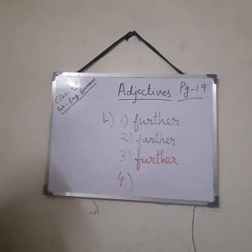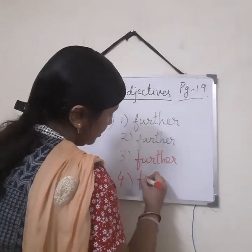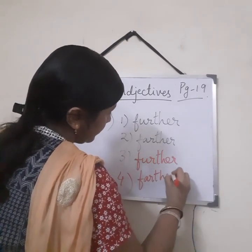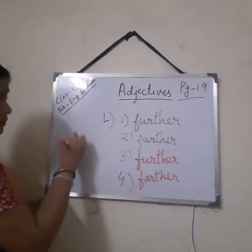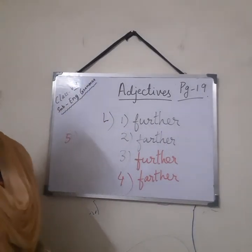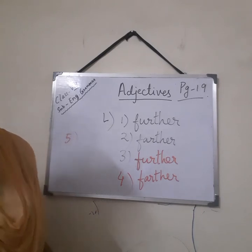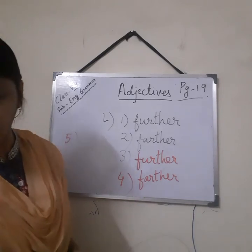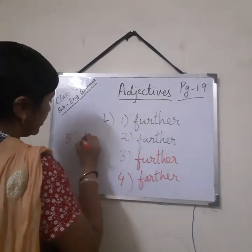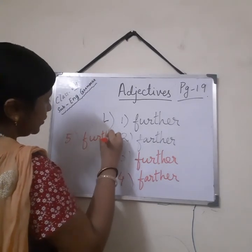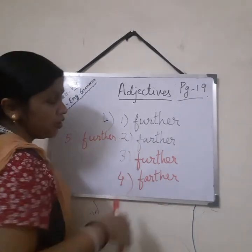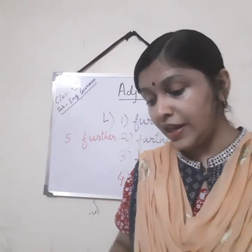Number 4: 'The park is farther from the school than the stadium' — here we use farther. Number 5: 'He avoided further remarks in order to avoid controversy' — it will be further. Copy all this in your book and we will be doing the next exercises in the next session. Try to solve them on your own. Thank you.